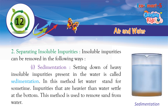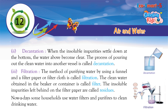Separating insoluble impurities: Sedimentation is the settling down of heavy insoluble impurities present in water. In this method, let the water stand for some time — impurities that are heavier than water settle at the bottom. This method is used to remove sand from water. Decantation: when the insoluble impurities settle at the bottom, the water above becomes clear. The process of pouring out the clean water into another vessel is called decantation.